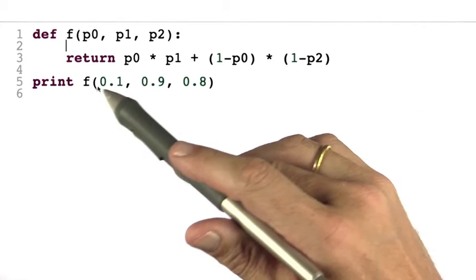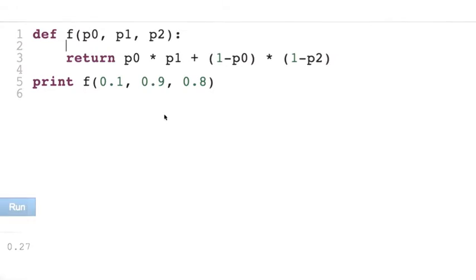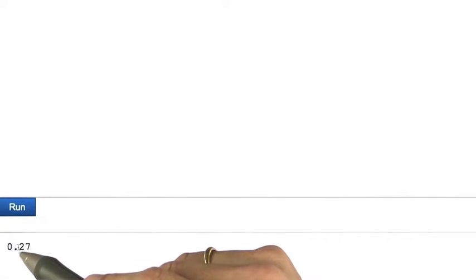So let's try this. Here's my function f with the parameters we just assumed. And if I hit run, I get 0.207.